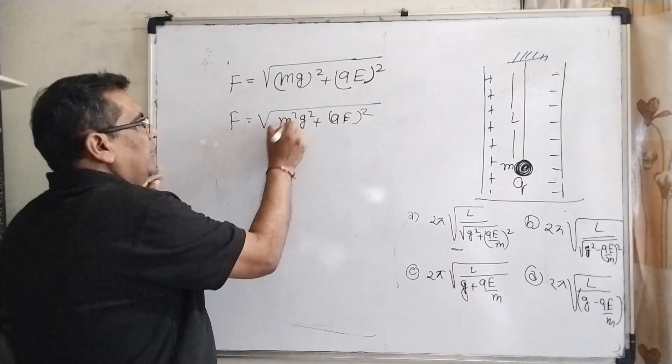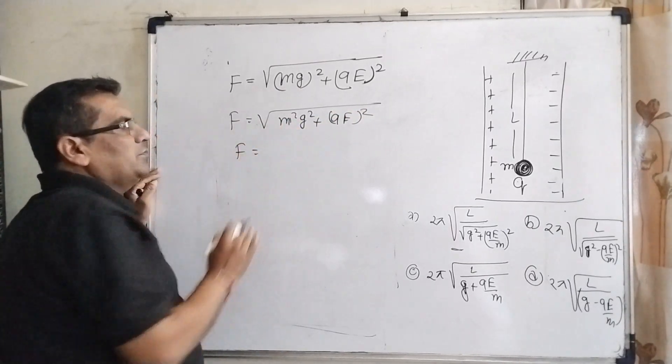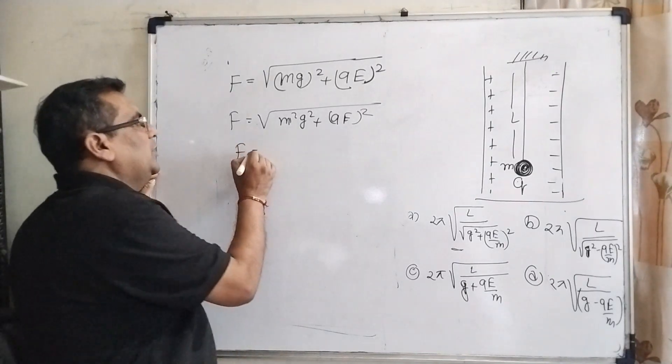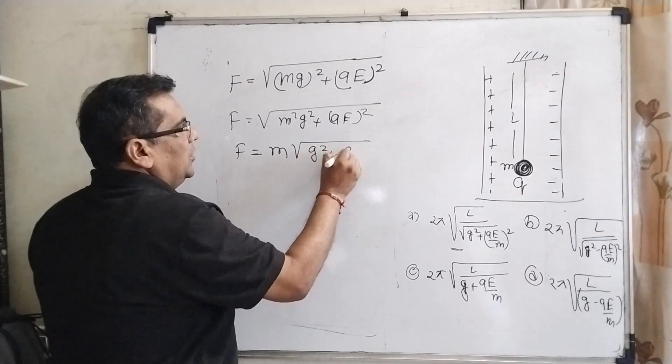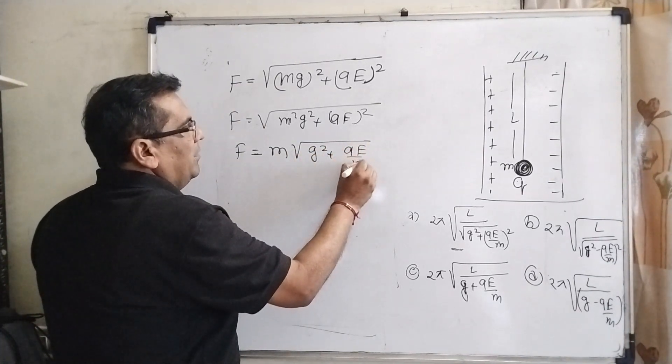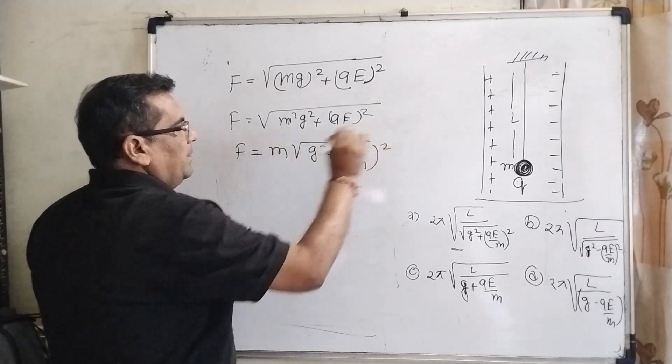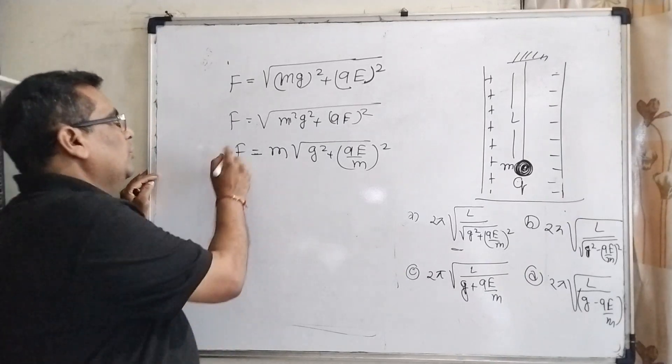Here we have taken out M² to the outside of the root. Now it becomes M√(g² + (qE/m)²).